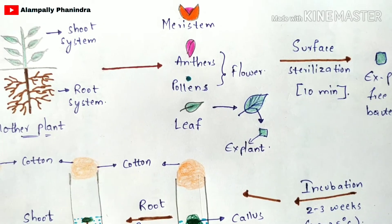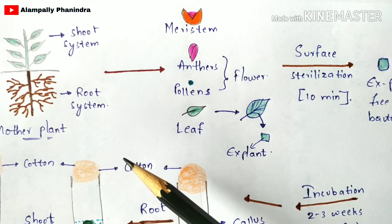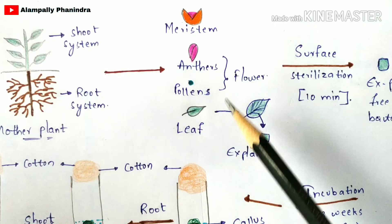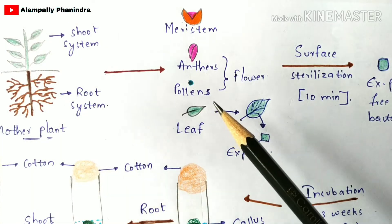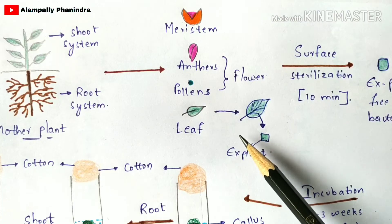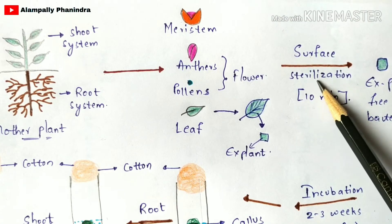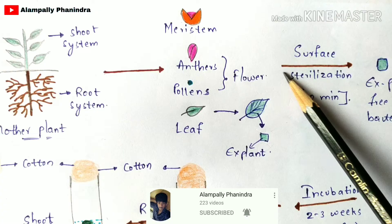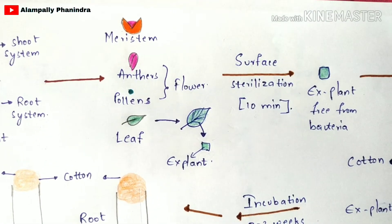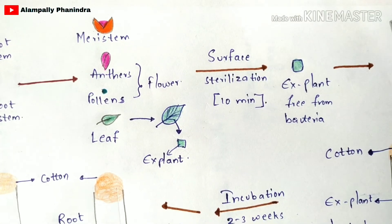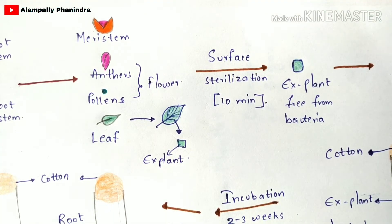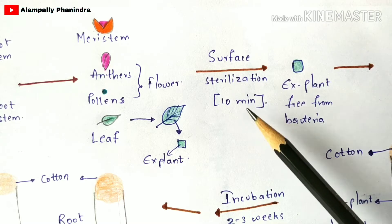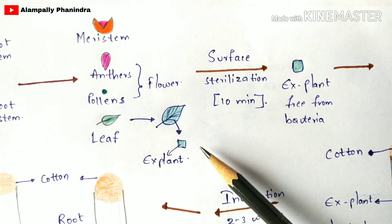The explant may contain bacteria because it was extracted from the mother plant and has been in the external environment, which contains both harmful and useful bacteria. Therefore, you must perform surface sterilization for 10 minutes. Surface sterilization is a process where bacteria present on the surface of the explant are removed. The procedure for surface sterilization is explained in the previous plant tissue culture video.